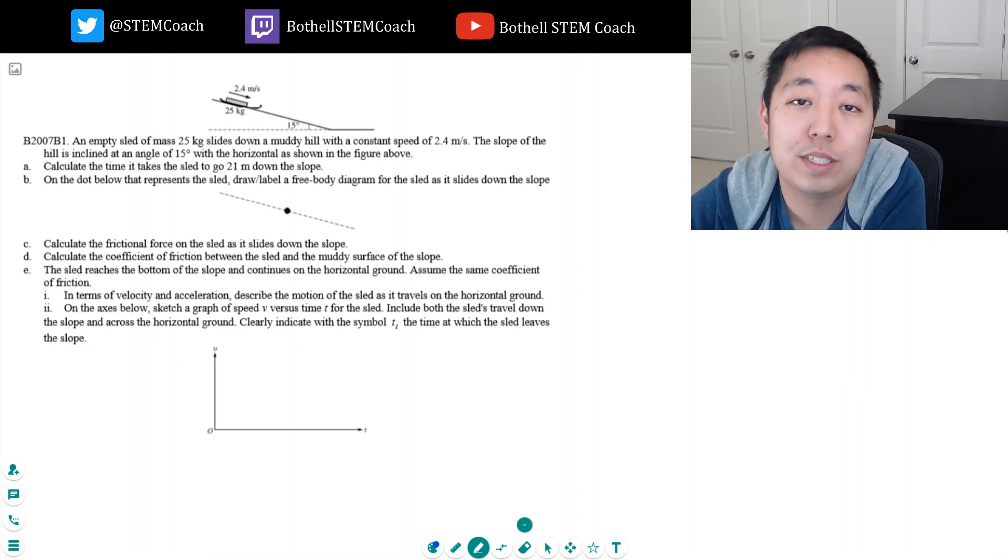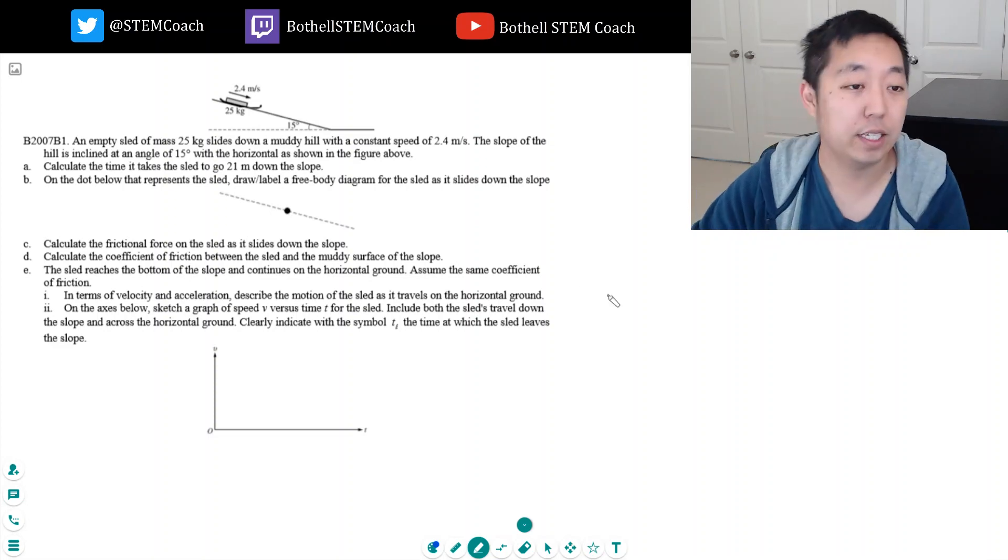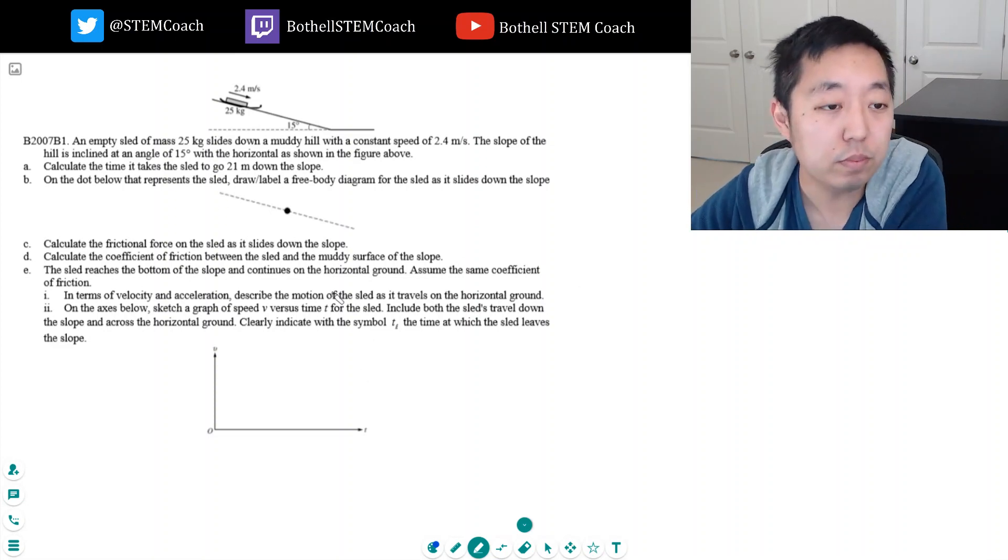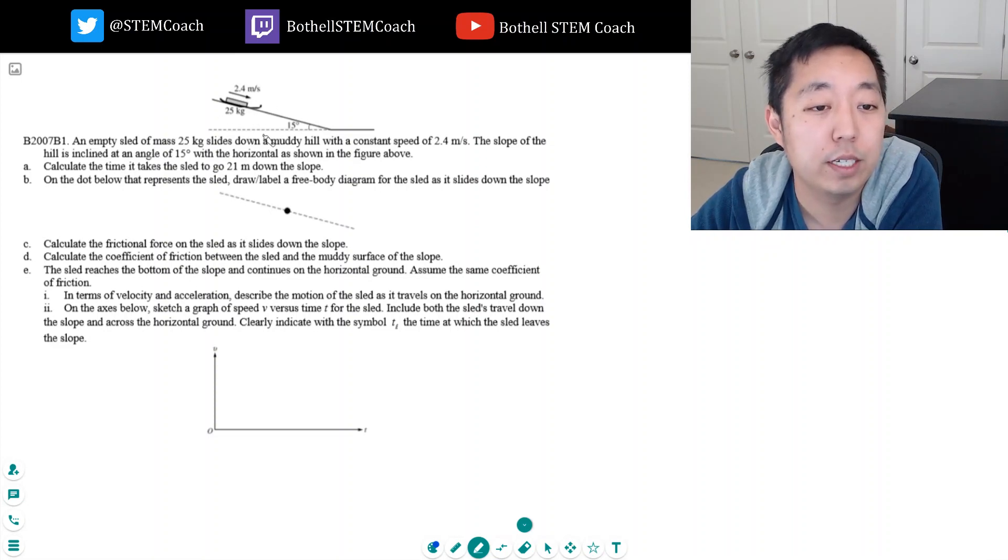Hey guys, this is Alan with Bothell STEM Coach, and today we're continuing on with some AP Physics dynamics questions. Let's get into this one: An empty sled of mass 25 kilograms sliding on a muddy hill with a constant speed of 2.4 meters per second. The slope of the hill's inclined angle is 15 degrees. Calculate the time it takes the sled to go 21 meters down the slope.